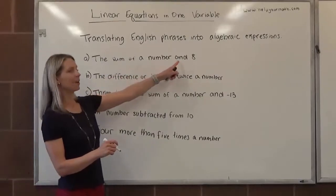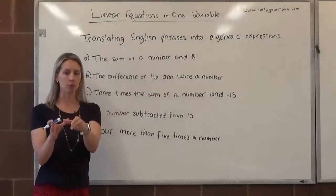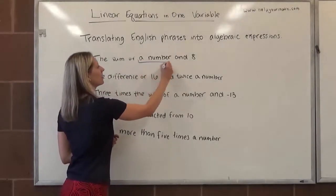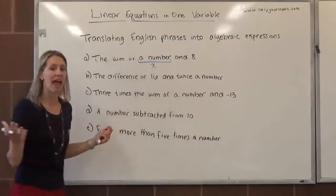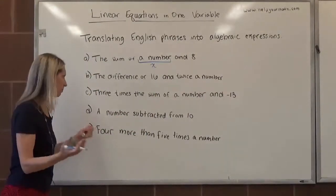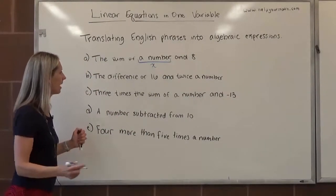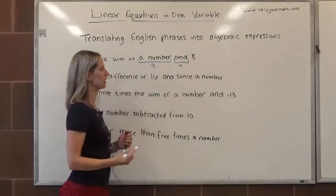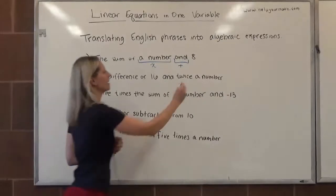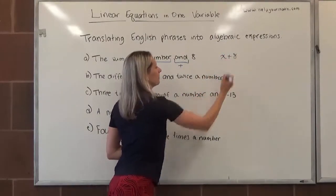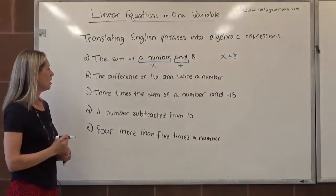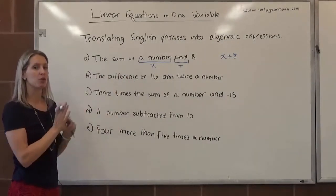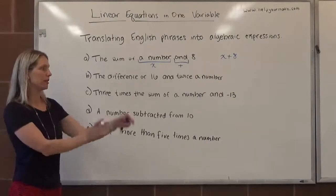Usually what we want to find is the word 'and', because that's going to tell us the first part and the second part. So the sum of a number, we'll call this number our unknown, we can use x or a, q, pretty much any standard letter is fine. And indicates this is where we're going to put the plus, and then eight is just the number eight. So the sum of a number and eight would translate to x plus eight. Even if there was something else to do, all it asks us to do is translate from English into algebra, we're done.